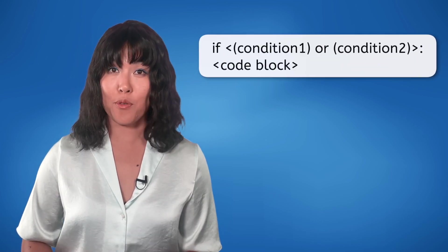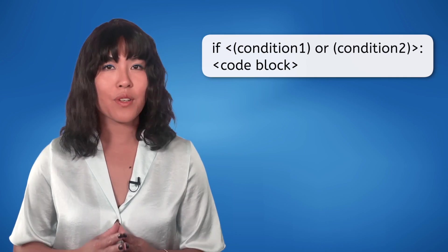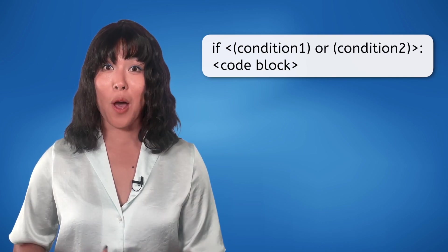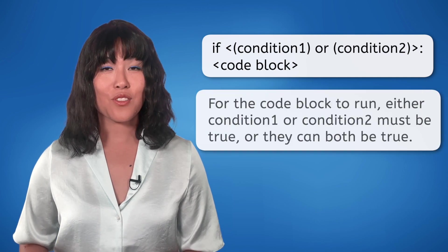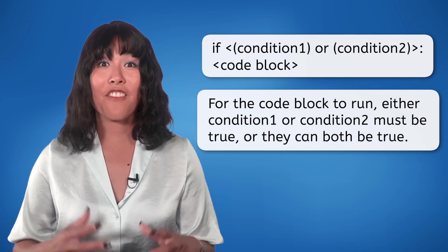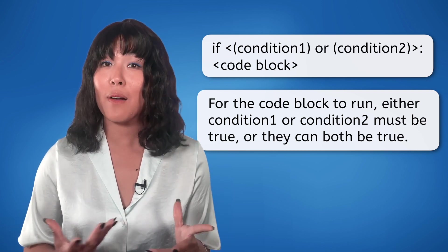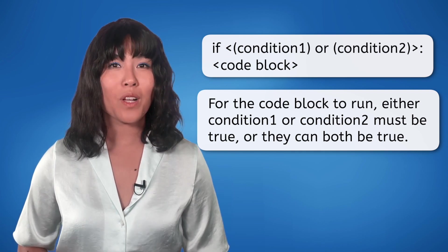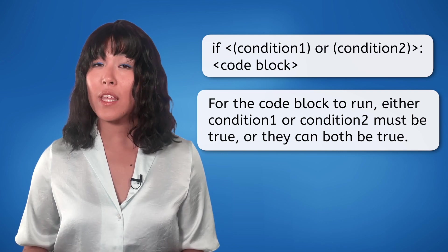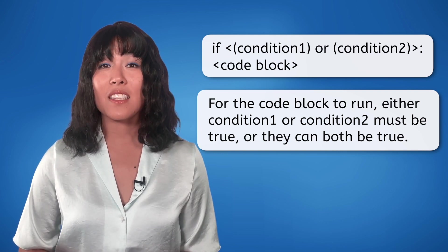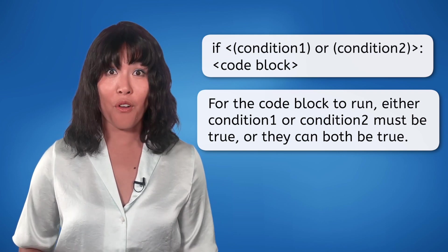Next, let's take a look at how the OR operator works. The OR operator is again placed between two conditions, just like the AND operator. Each condition is checked individually, and if either condition is true, the whole condition becomes true and the code block will execute. The only way the code block is skipped is if both conditions are false.